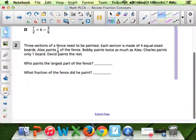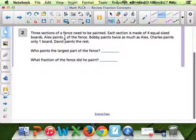Three sections of a fence need to be painted. Each section is made of four equal-sized boards. Alex paints one section of the fence. Bobby paints twice as much as Alex. Charles paints only one board. David paints the rest. Who paints the largest part? You'll be like, oh my God, what you talking about? There's so much stuff going on here. Really, I'm supposed to read that? Relax. Draw it.